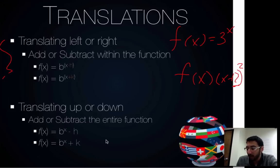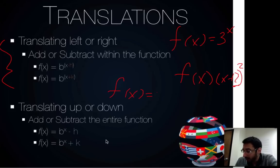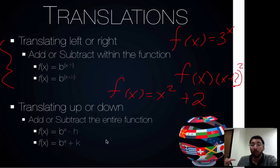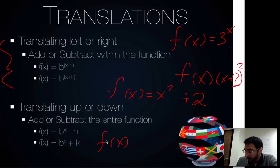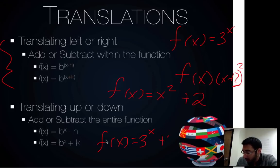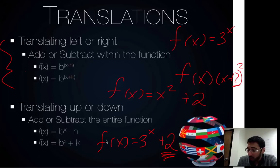Make sure you are copying this down. The same rules work for up and down. With a parent function like x squared, if you add a number outside of the parent function — say, add 2 outside — that moves the graph up. The same thing happens with exponential functions. For example, f of x equals 3 to the x, and if the plus 2 is on the outside of the function — not up in the exponent — that tells you to move it up. These are the two formal ways we write this in math, so make sure you copy this down.